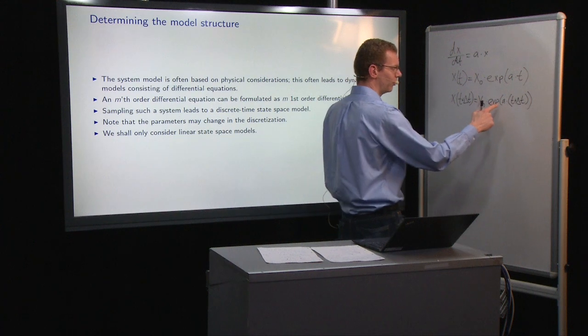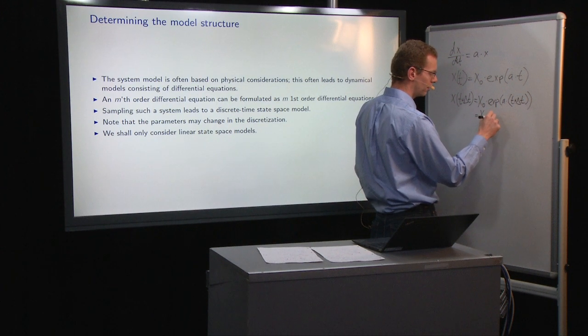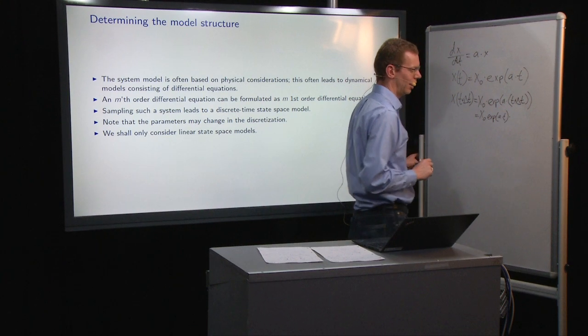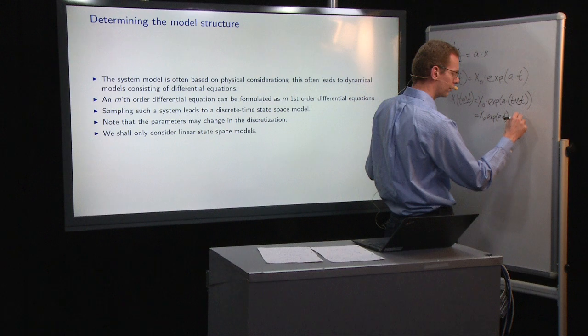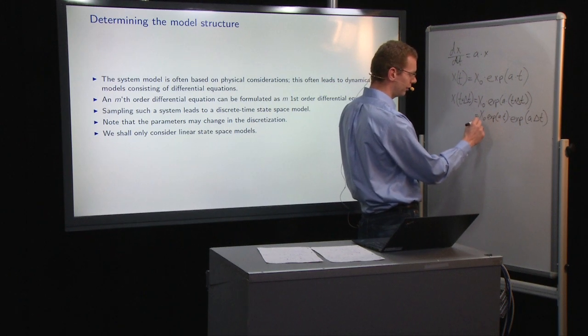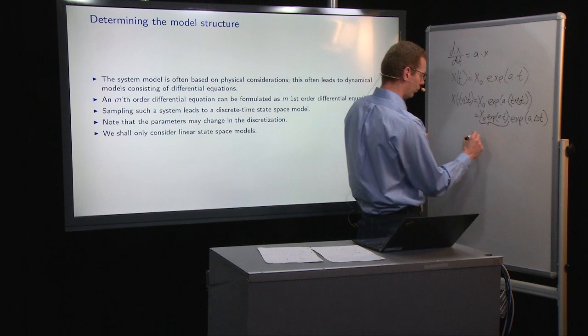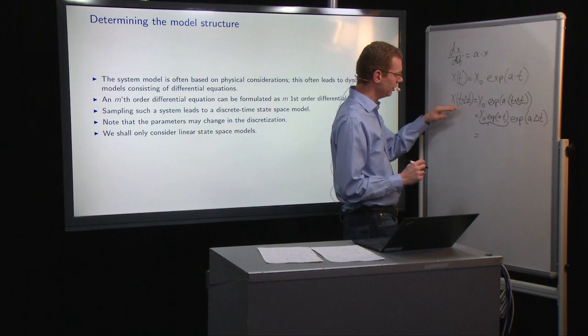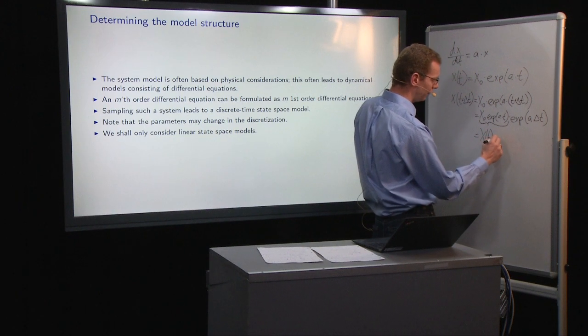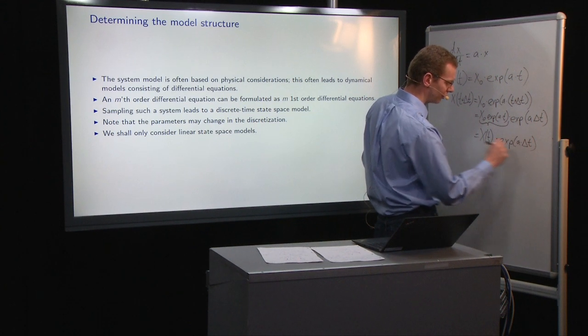Now, if we look at this, we can take the sum in here and split it out. So we have that as x_0 times the exponential of a times t, and we multiply that by the exponential of a times delta t. What we'll see here is that we'll identify the first bit here. That is exactly what we have up here as x_t. So x_t plus delta t, what we have is what we already got, x of t, and then we have it times the exponential of a times the sampling period delta t.